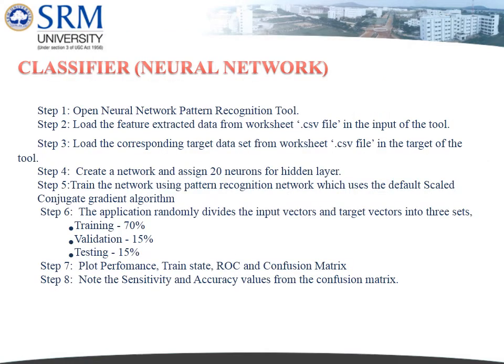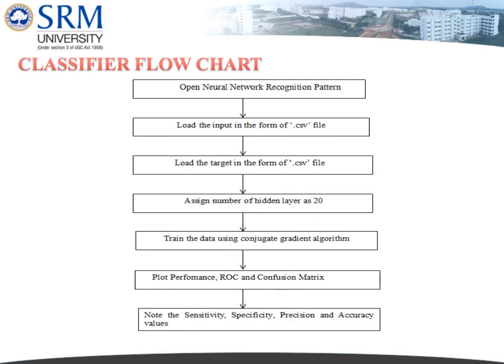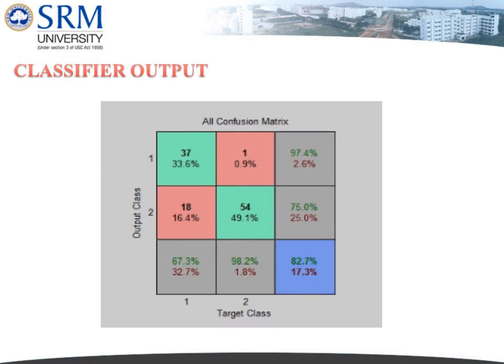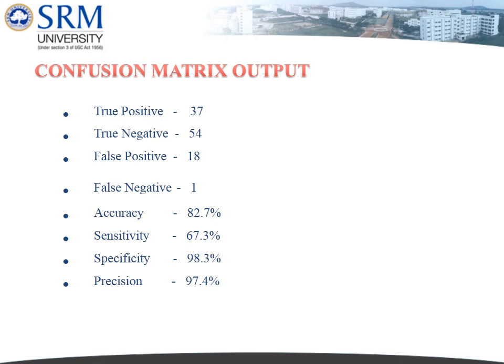The classifier used is a neural network. The process involves opening the Neural Pattern Recognition (NPR2) tool, loading input and target files, training the system, and plotting the confusion matrix and ROC plot. From the confusion matrix output, we obtain: true positive as 37, true negative as 54, false positive as 18, and false negative as 1.